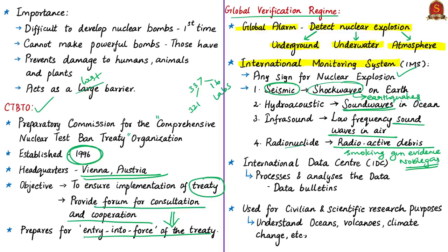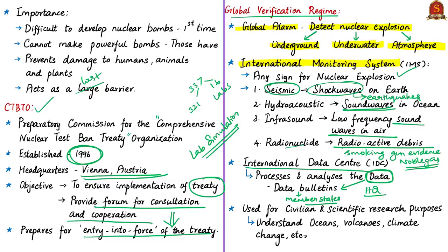The next element is the International Data Center, located at CTBTO headquarters in Vienna, Austria. It processes and analyzes data from monitoring stations and produces bulletins submitted to member states for evaluation. The CTBT monitoring data and technologies can also be used for civilian purposes and scientific research — the data could help us better understand the oceans, volcanoes, climate change, movement of whales, and many other issues.